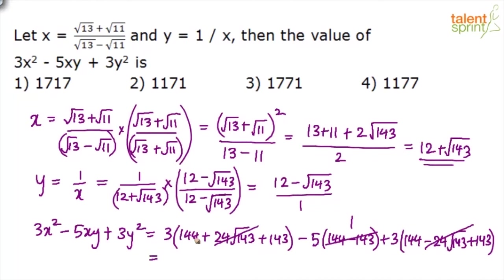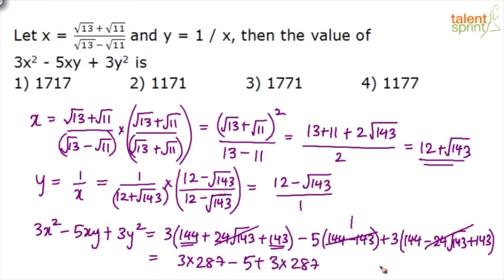Final answer: 3 × 287 - 5 + 3 × 287, which is 6 × 287 = 1722, minus 5 = 1717. So the answer is 1717, which is option 1.